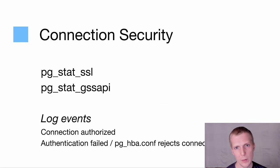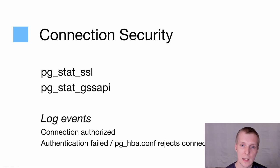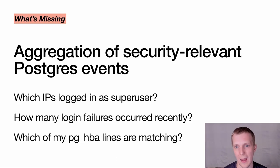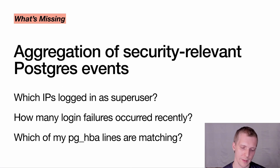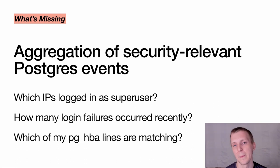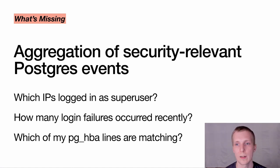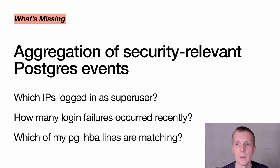On connection security, you have views like pgstat_ssl, pgstat GSS API for Kerberos, and a bunch of log events. The thing really missing for connection security is an aggregate view of who has tried to access my database. You can get that information by parsing log files carefully, but there isn't a good summary view. If I have a lot of activity, it's easy to miss individual events. Something as simple as a counter showing this user has logged in this many times, or this pg_hba line has matched — somebody logging in via trust authentication right now is pretty much invisible, which is a problem in security-sensitive systems.